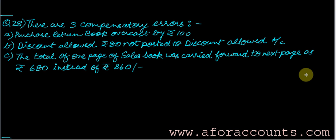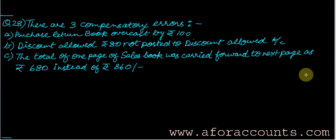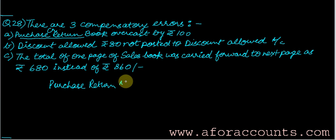Question number 28 — there are three compensatory errors. One error compensating the other and nullifying the effect is known as a compensatory error. First: a purchase return book is overcast by ₹100. The purchase return account has a credit balance, but since it is overcast by ₹100, to remove this effect, we will debit it by ₹100. So the first entry is: purchase return account debit by ₹100.